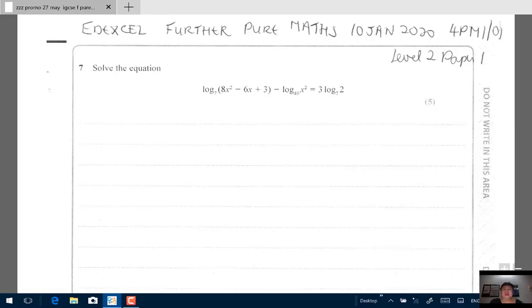Welcome back boys and girls to TheMedCenter.com. In this video, I'd like to share with you how to solve this question. This is question number seven from a very recent exam. The exam was held on 10th of January 2020. This is the Pearson Edexcel Further Pure Maths January 2020 exam. The exam code is 4PM01. It's a level 2 paper 1.